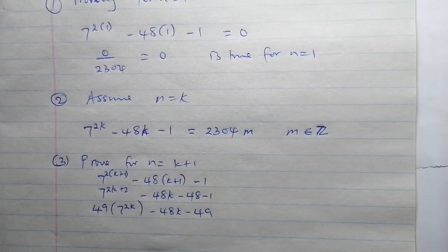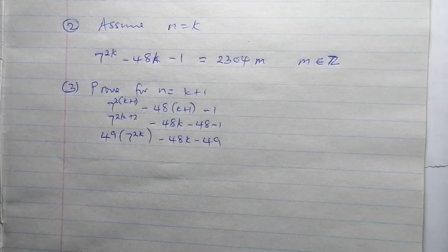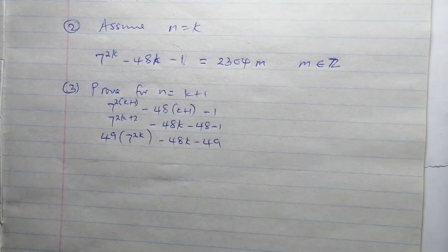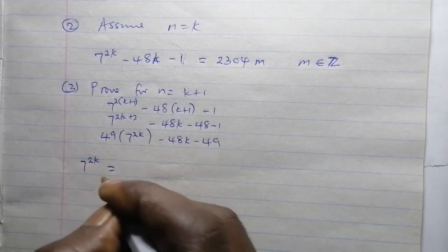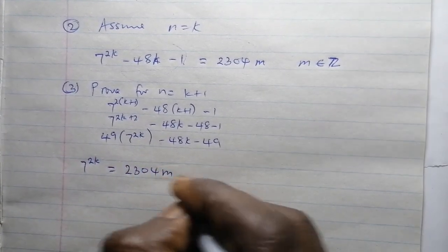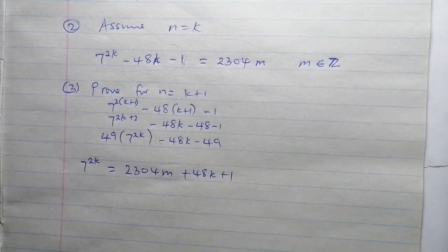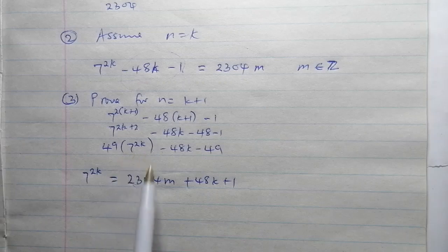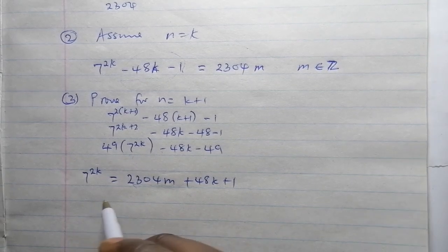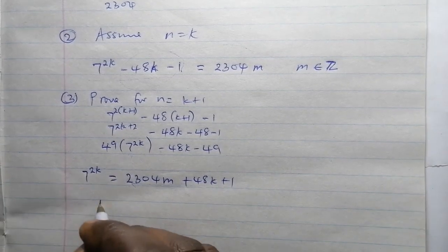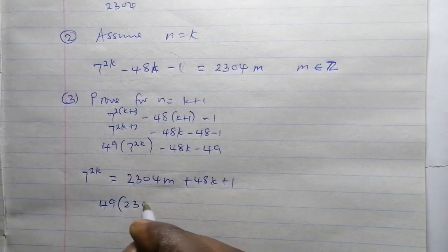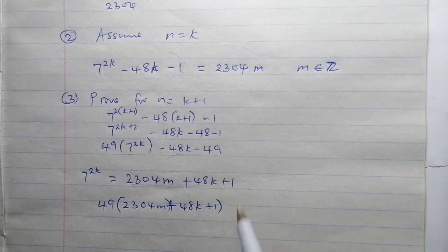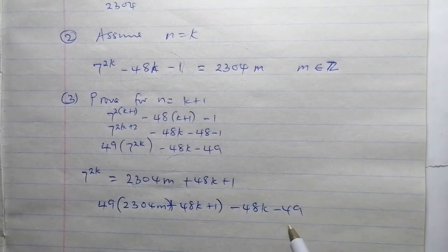Now we make use of the inductive hypothesis from Stage 2. Rearranging Stage 2, we get 7 to the power 2k equals 2304m plus 48k plus 1. Substituting this into our Stage 3 expression, we get 49 multiplied by (2304m plus 48k plus 1), minus 48k, minus 49.